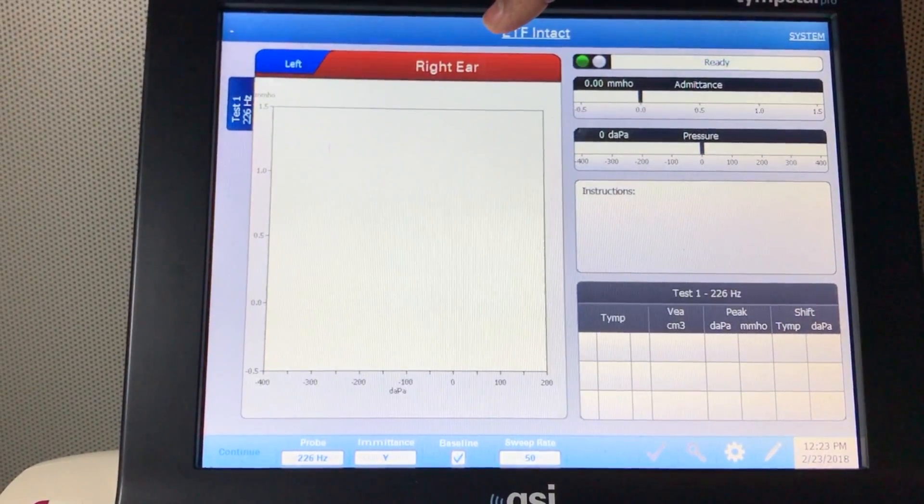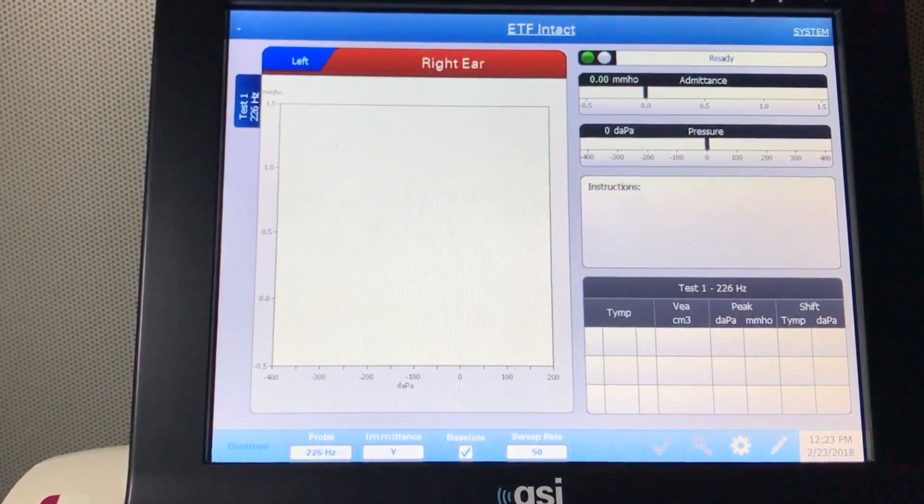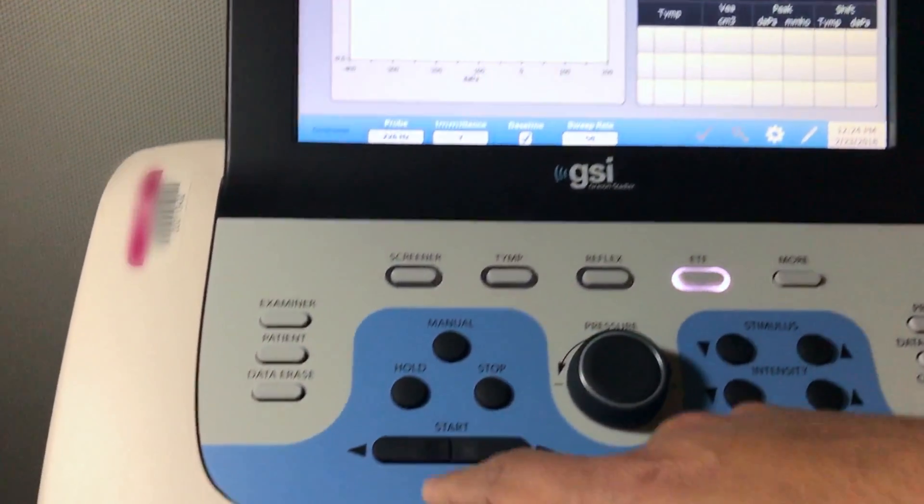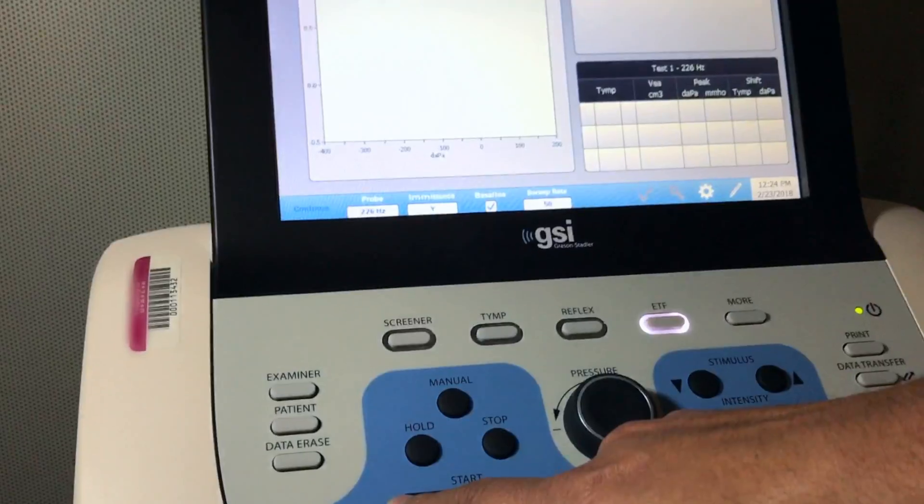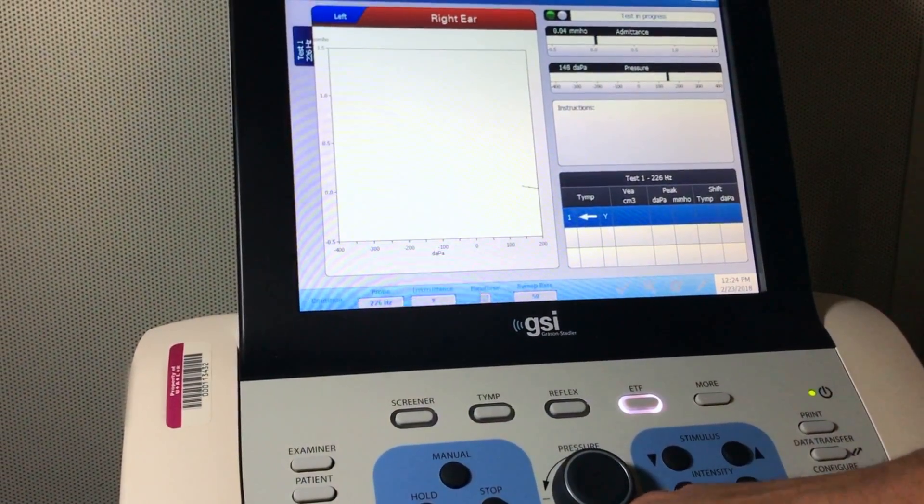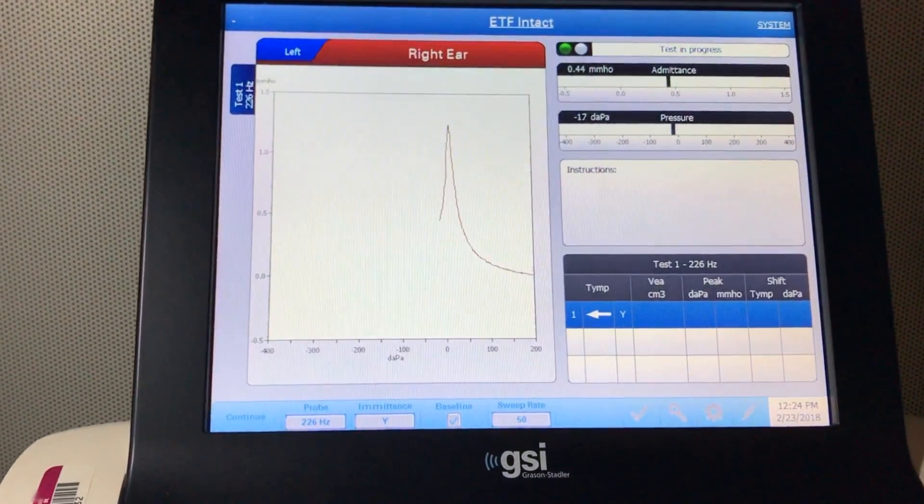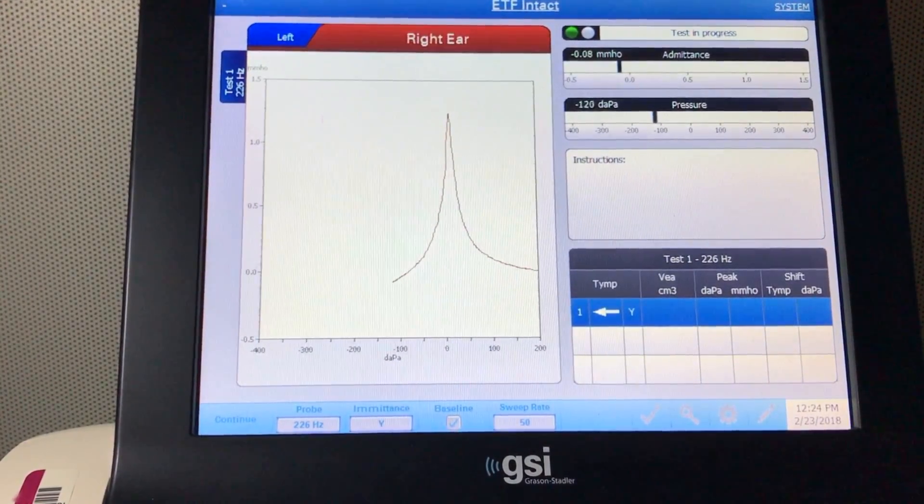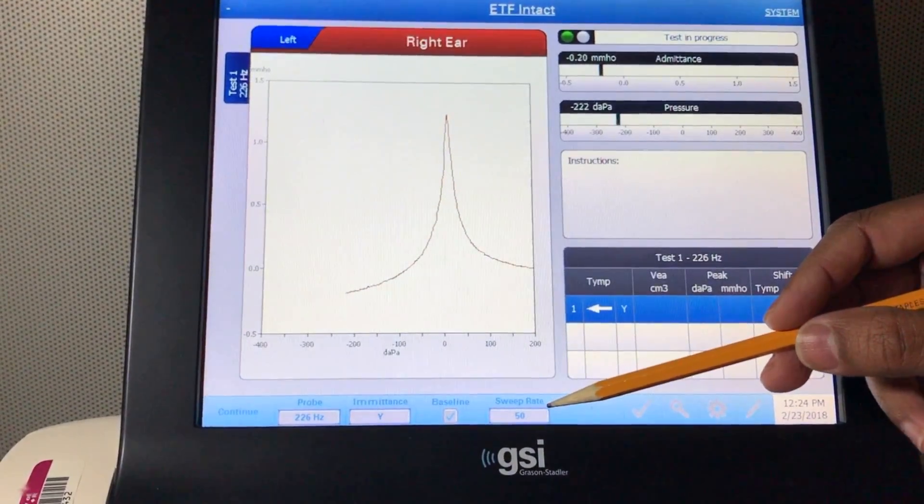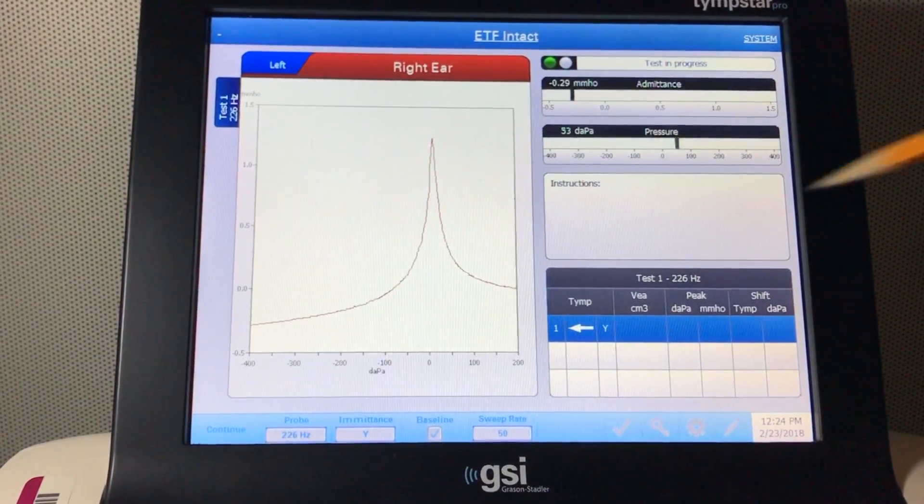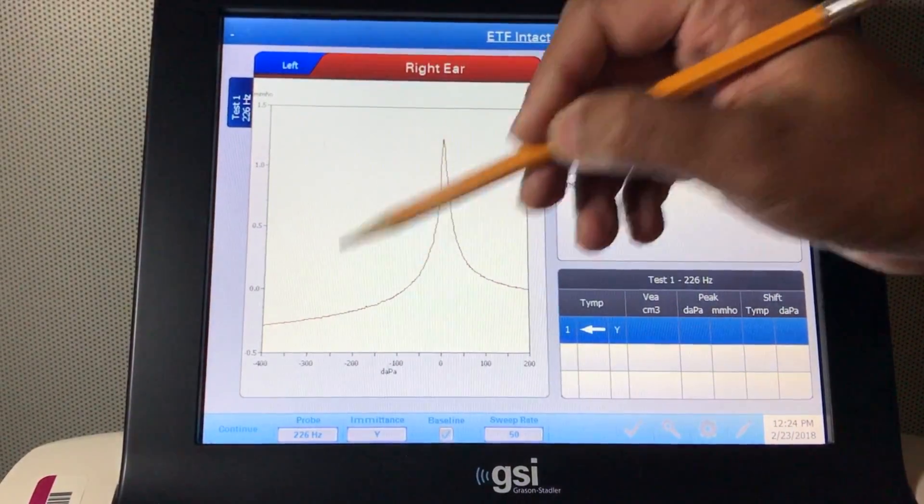We're going to be performing on the right ear. So first you need to get a baseline tympanogram. All you need to do is press start here. So we're getting a baseline tympanogram. We have already placed the probe in the ear, and as you can note here, the sweep rate is 50 decapascal per second, which is slow but it's supposed to be good to get a good tympanogram.